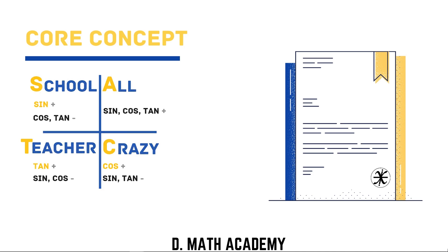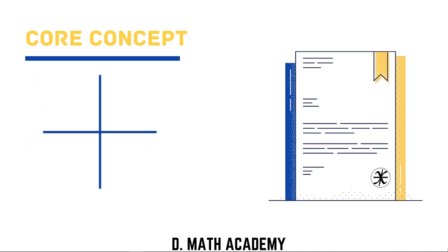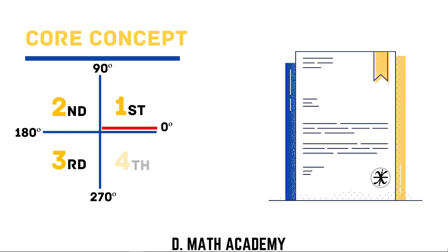I can also label these as the first, second, third, and fourth quadrant. The red line shown represents the starting point. At the starting position it is 0 degrees, at the top is 90 degrees, the second quadrant reaches up to 180 degrees, followed by the third quadrant at 270 degrees, and the fourth ends at 360 degrees.